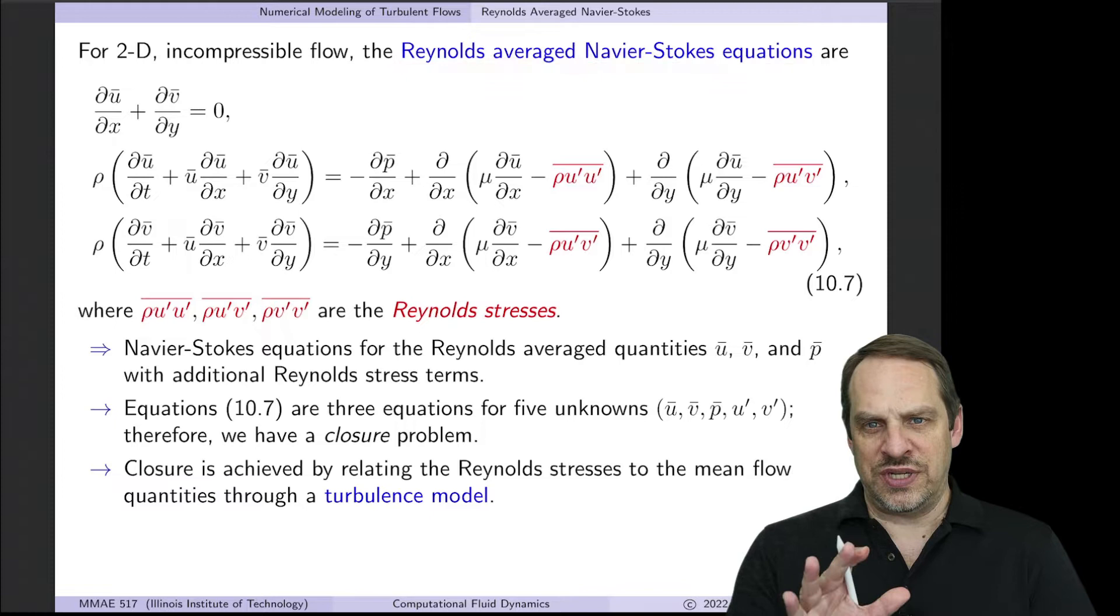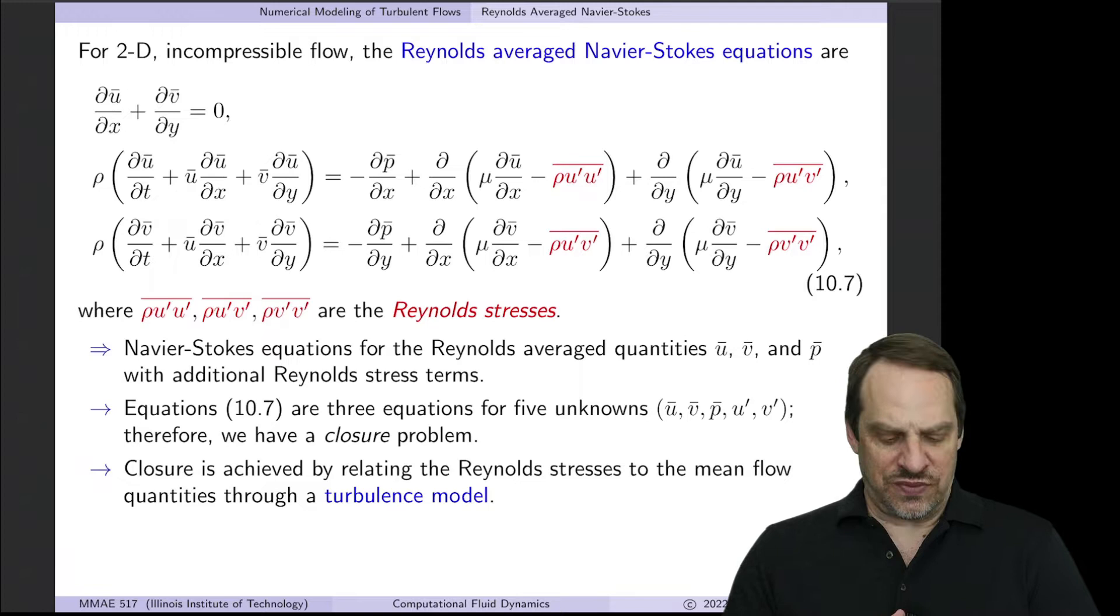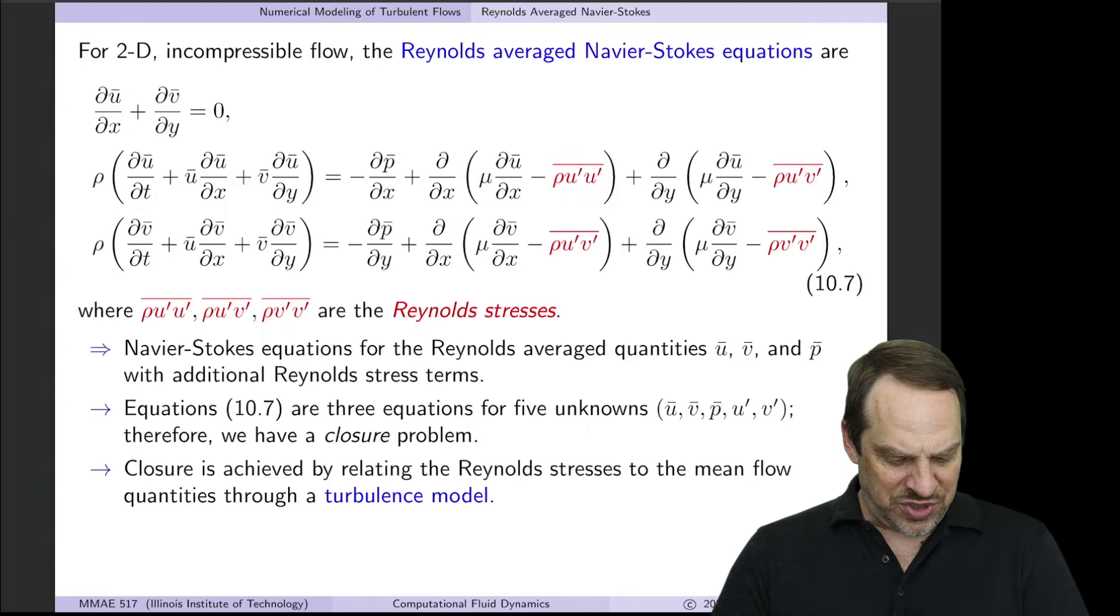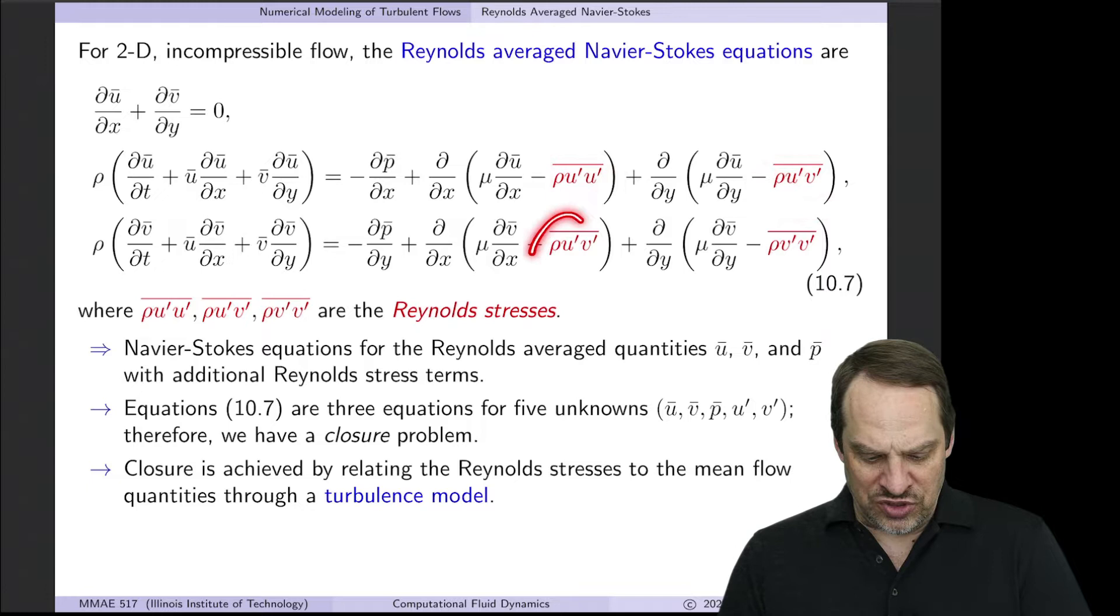So we formally Reynolds average the Navier-Stokes equations. I won't go through the details. I want to focus on these methods from a high-level point of view. When you go through the derivations, you get a continuity equation for U-bar and V-bar, an X-momentum equation, a Y-momentum equation for U-bar, V-bar, and P-bar. You'll notice convection terms, pressure gradient terms, viscous diffusion terms.